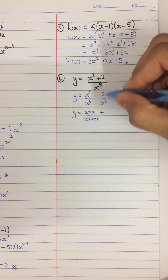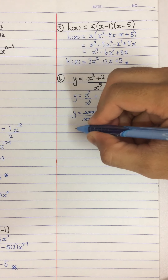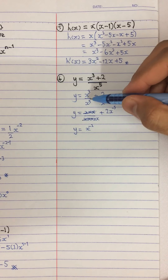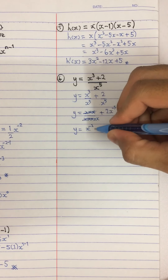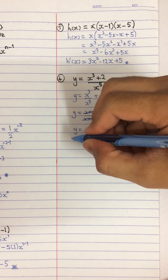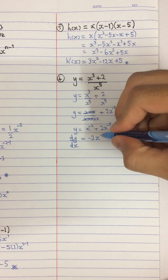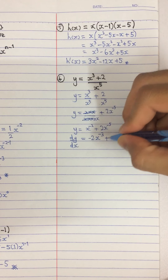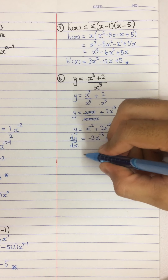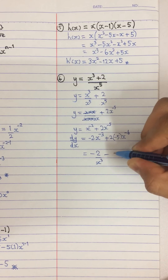Sometimes the question will give you f(x). If you are given f(x) equals 1 over 2 x squared, the first derivative is written as f'(x). Before we find the first derivative, because x is in the denominator, we need to bring x up. So we don't bring the 2 up — only x. So you have 1 over 2 times x to the power of negative 2.